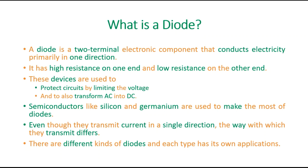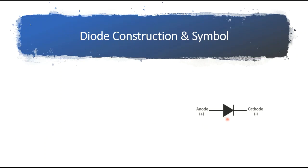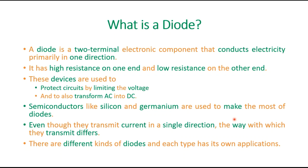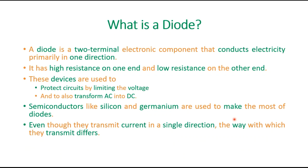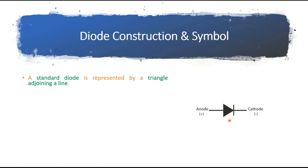There are different kinds of diodes and we are going to discuss about each of them in detail in upcoming slides. Looking at the diode symbol, it looks like a triangular shape with a line. A standard diode is represented by a triangle adjoining a line — this is the triangle and the adjoining line, and this is how we represent the diode.